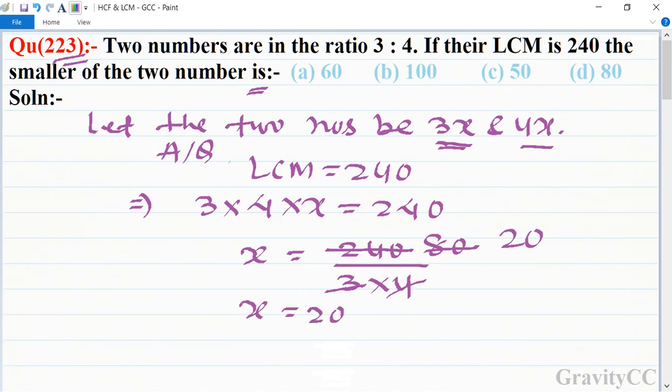Now find the smaller of the two numbers. The smaller one is 3x, which equals 3 into 20, which equals 60. This is the required smallest number, so 60 is the correct answer.